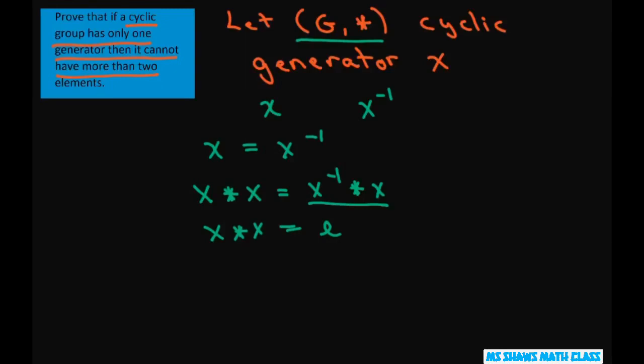Therefore, G star can only have two elements, which are E and X.